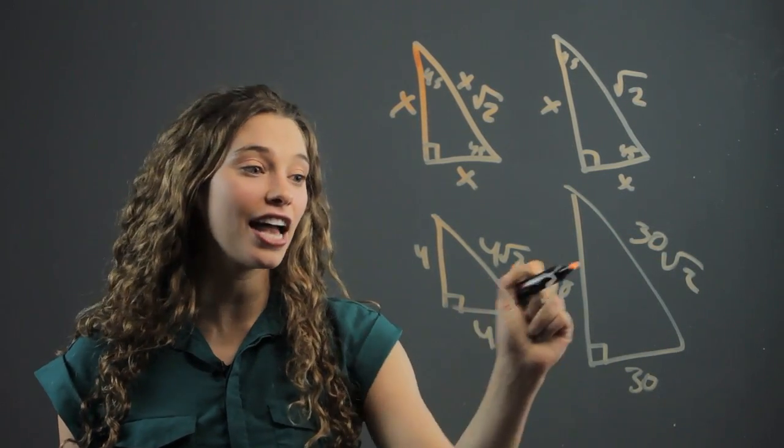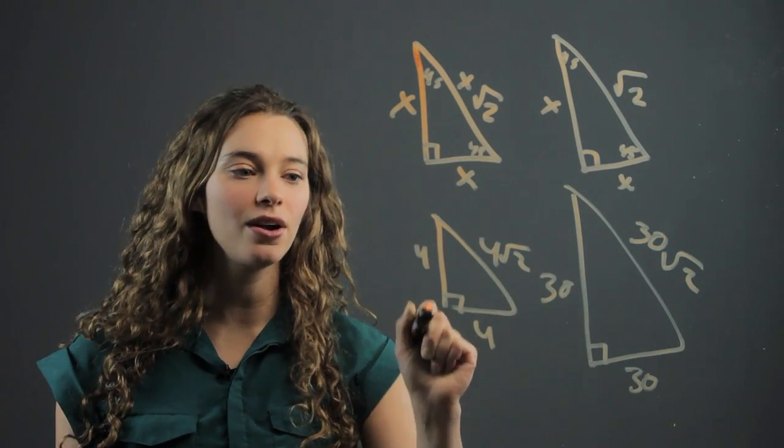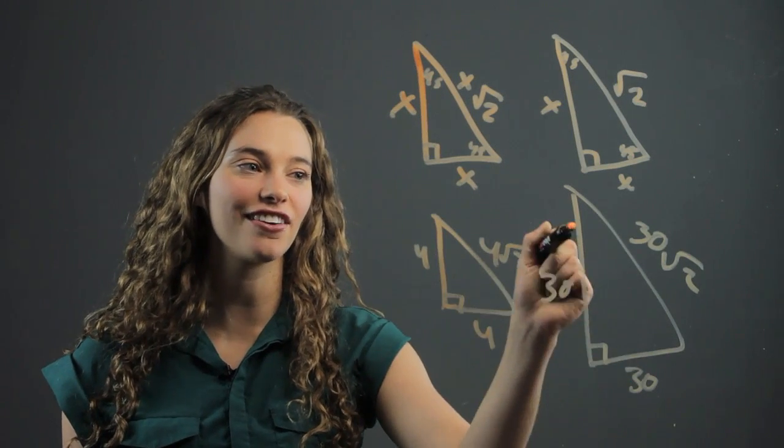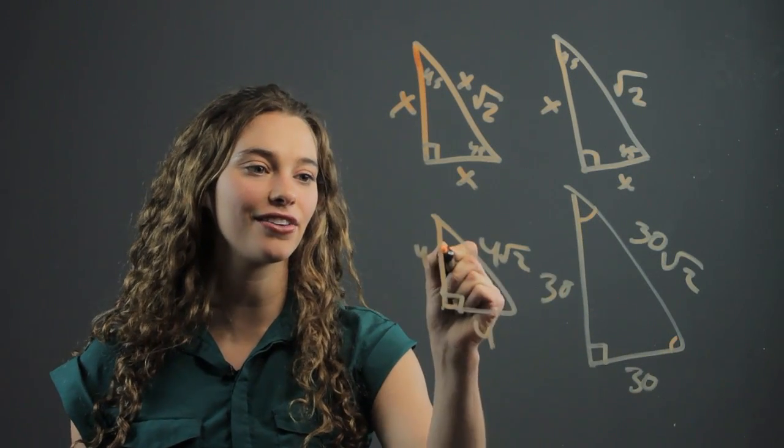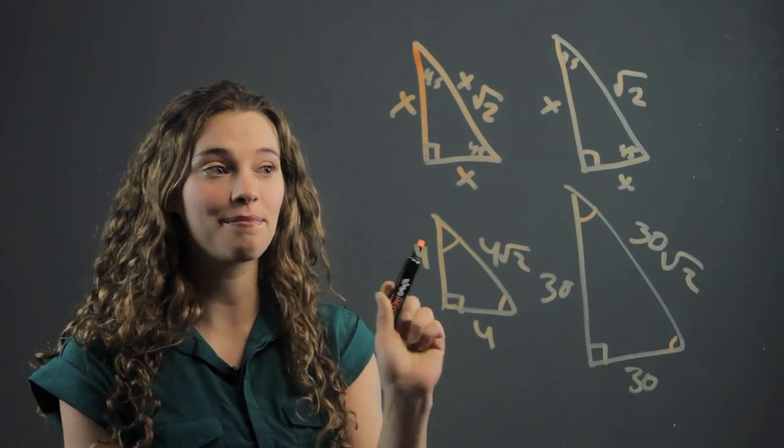But these sides do correspond because, as you can see, it's the same ratio and they're both 45, 45, 90 right triangles. They have the same angles. So therefore, the sides correspond. They're not congruent, but they do correspond.